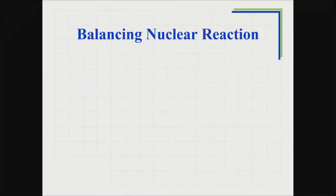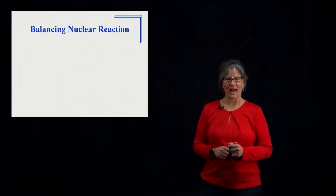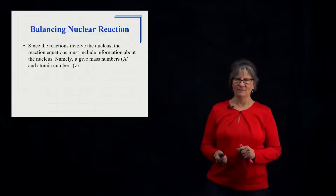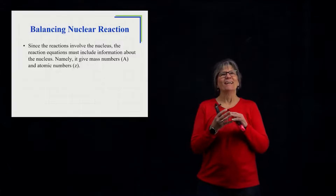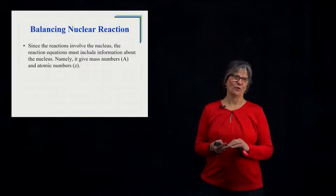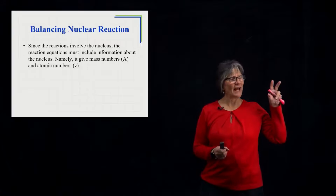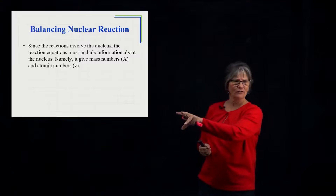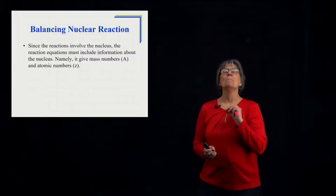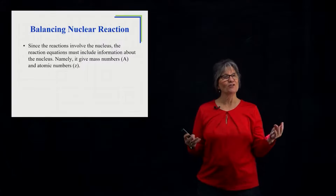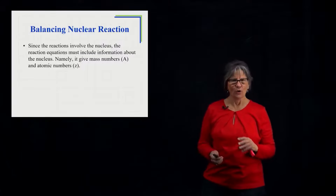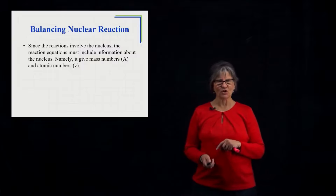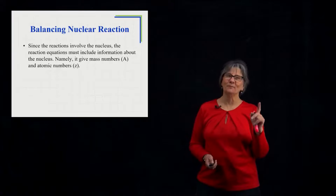We need to learn how to balance nuclear reactions. This process is very different than balancing chemical reactions. In chemical reactions, if we had five oxygens on one side, we needed five oxygens on the other side. But in a nuclear reaction, since the atoms are changing, we're not going to make sure that the atoms are balanced — we have to make sure that something else is balanced.